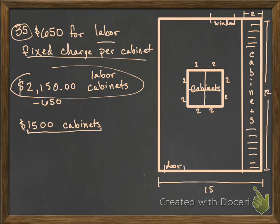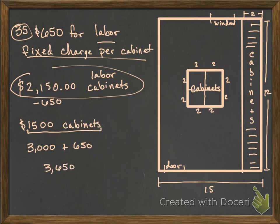That's going to be $3,000. And then we add in the labor cost — the labor doesn't change for more cabinets. So this gives us $3,650 for the total cost for labor and installation in building the cabinets.